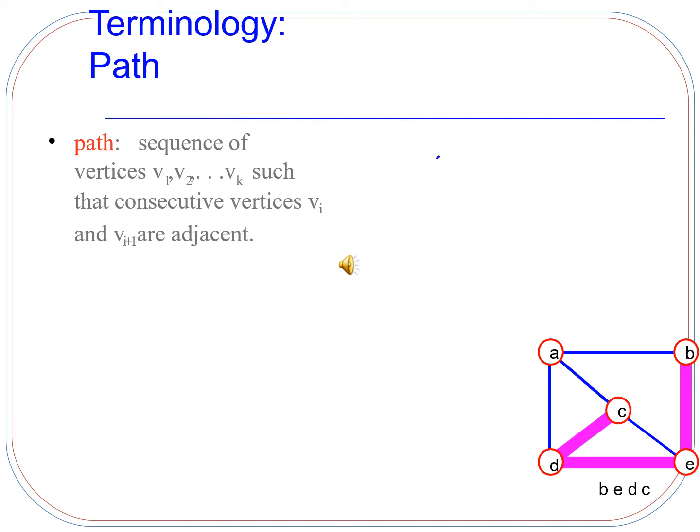What is a path? A path is a sequence of vertices V1, V2, up to Vk such that consecutive vertices Vi and Vi+1 are adjacent to each other. The example shown here shows a path from node B to node C. To go from B to C, we go through vertices that are adjacent to each other: one path is B to E, E to D, and D to C. Another path is from B to A and A to C.